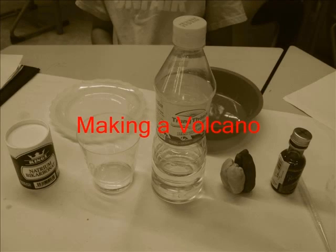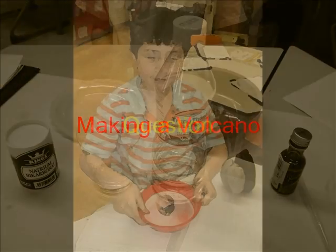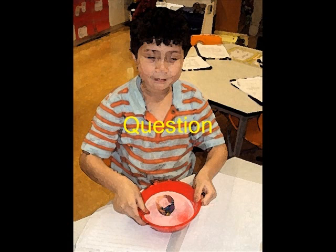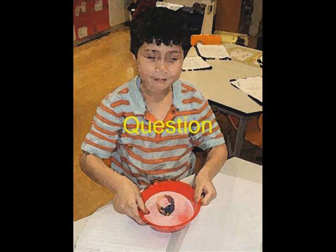Making a Volcano. Question. How can a solid baking soda and a liquid vinegar change by erupting?